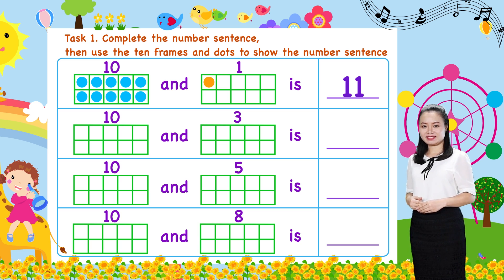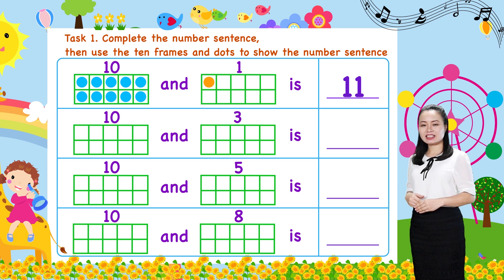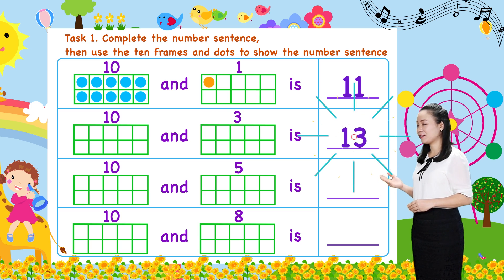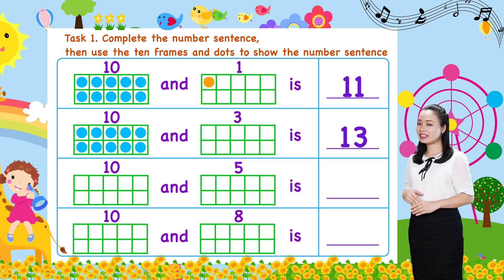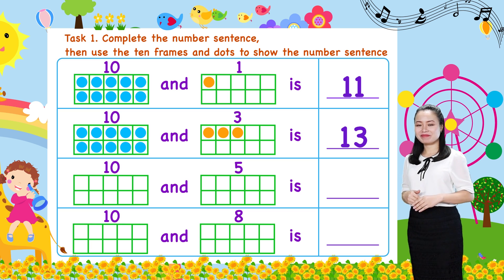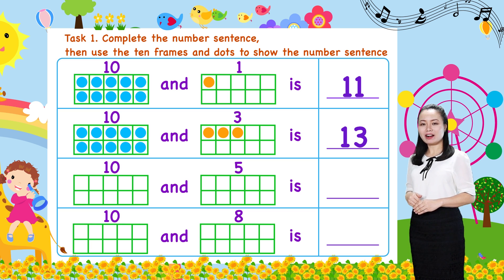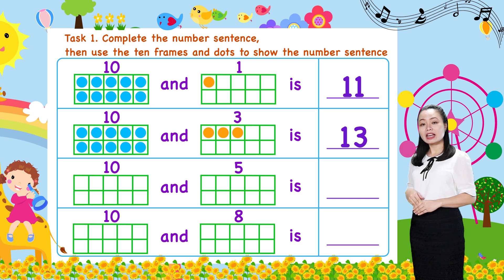Next, 10 and 3 is 13. To show this number sentence, draw 10 dots in the 10-frame, then draw 3 more dots. So there are 13 dots that represent number 13.